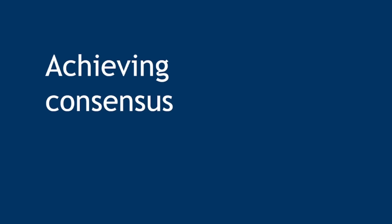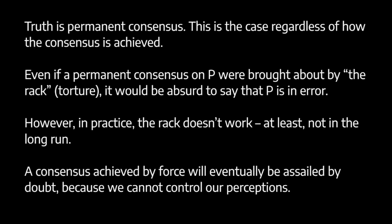On Peirce's view, truth is a matter of stable consensus — permanently settled consensus. In at least some places, Peirce suggests that it doesn't actually make any difference in principle how this consensus is achieved. He says: 'If a general belief which is stable and immovable can in any way be produced, though it be by the faggot and the rack, to talk of any error in such a belief is absurd.' In practice, Peirce expects that only open scientific inquiry is going to be suitable for achieving a stable consensus. The problem with using torture is that in the long run it just doesn't work — it doesn't achieve consensus.